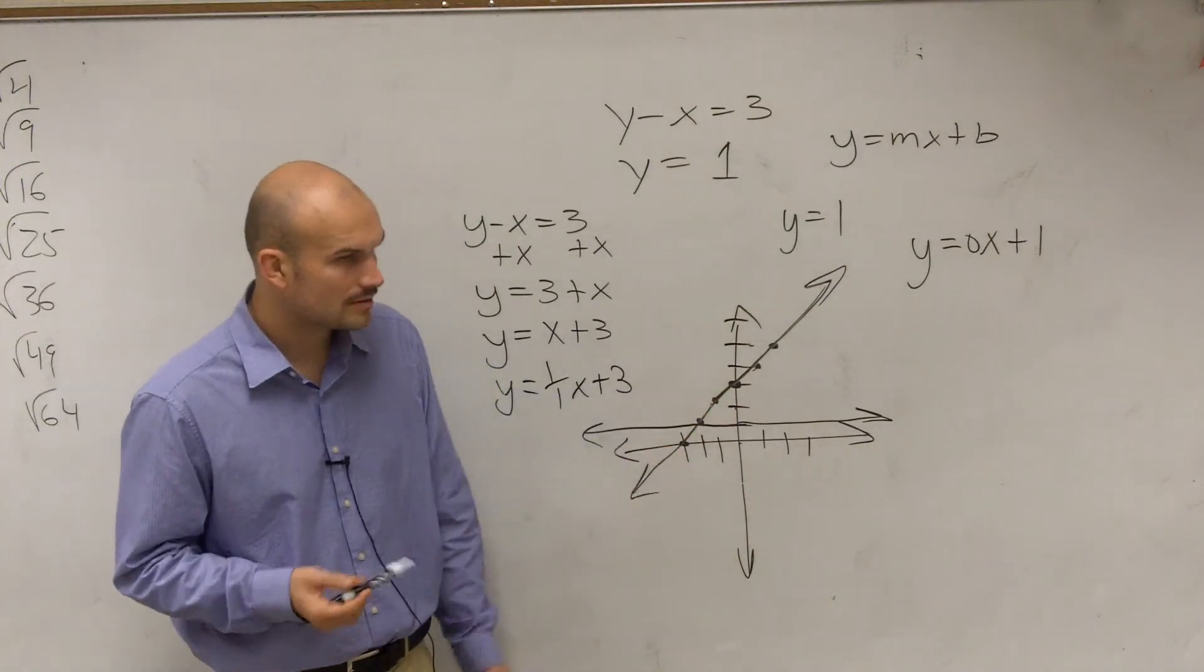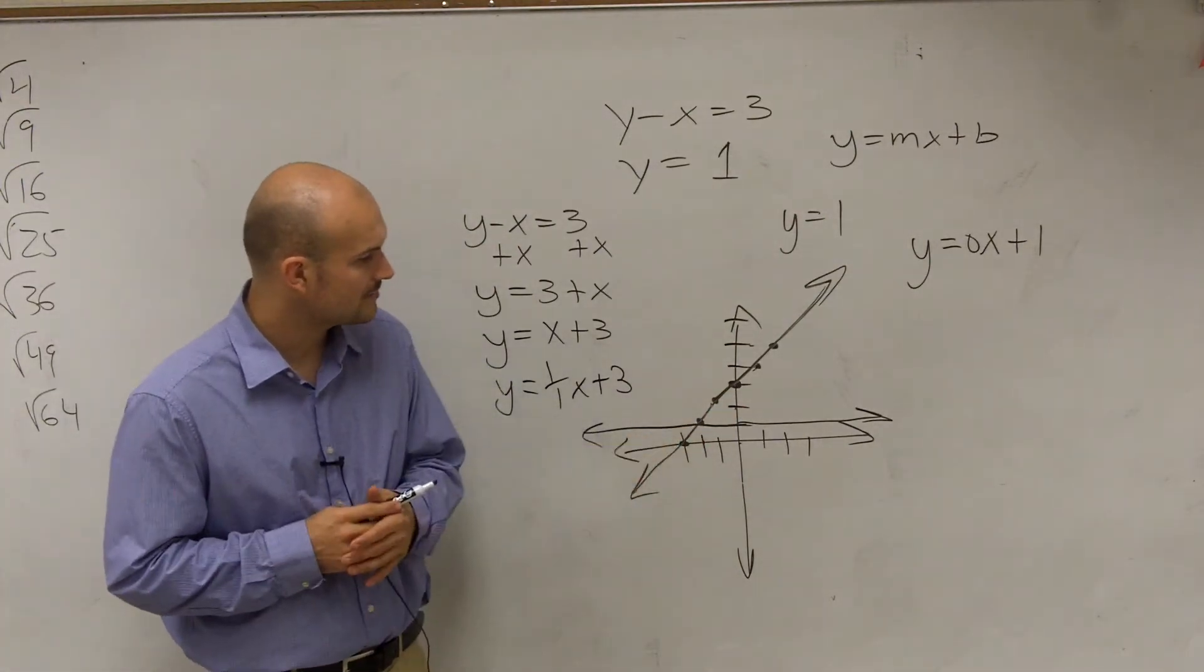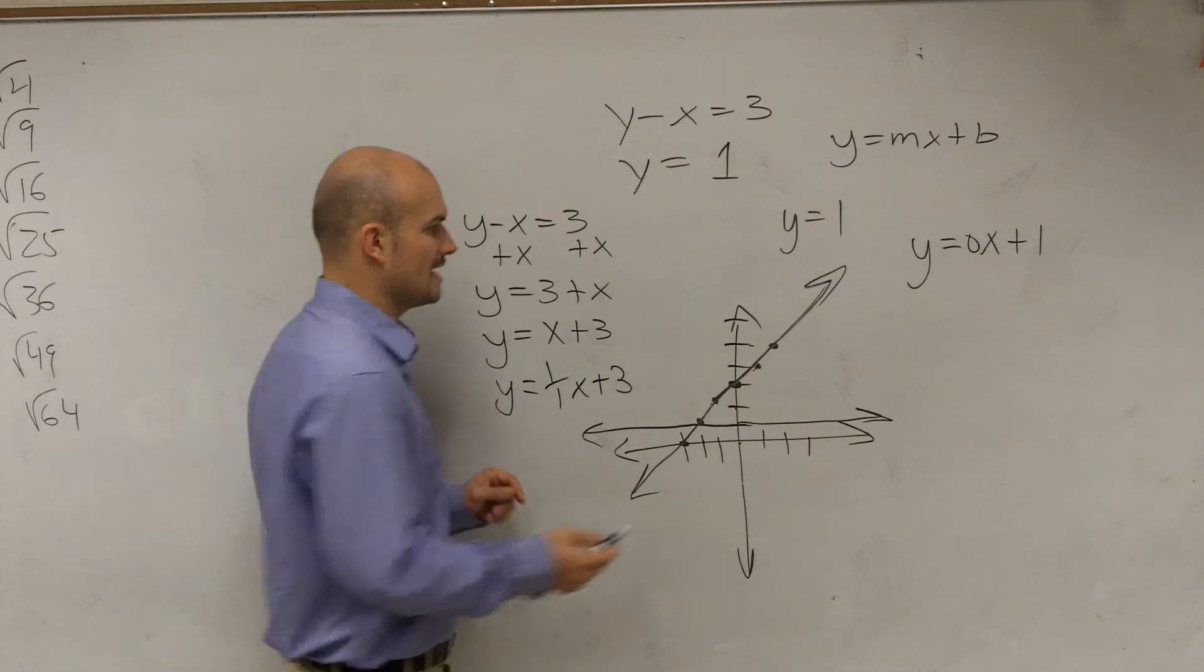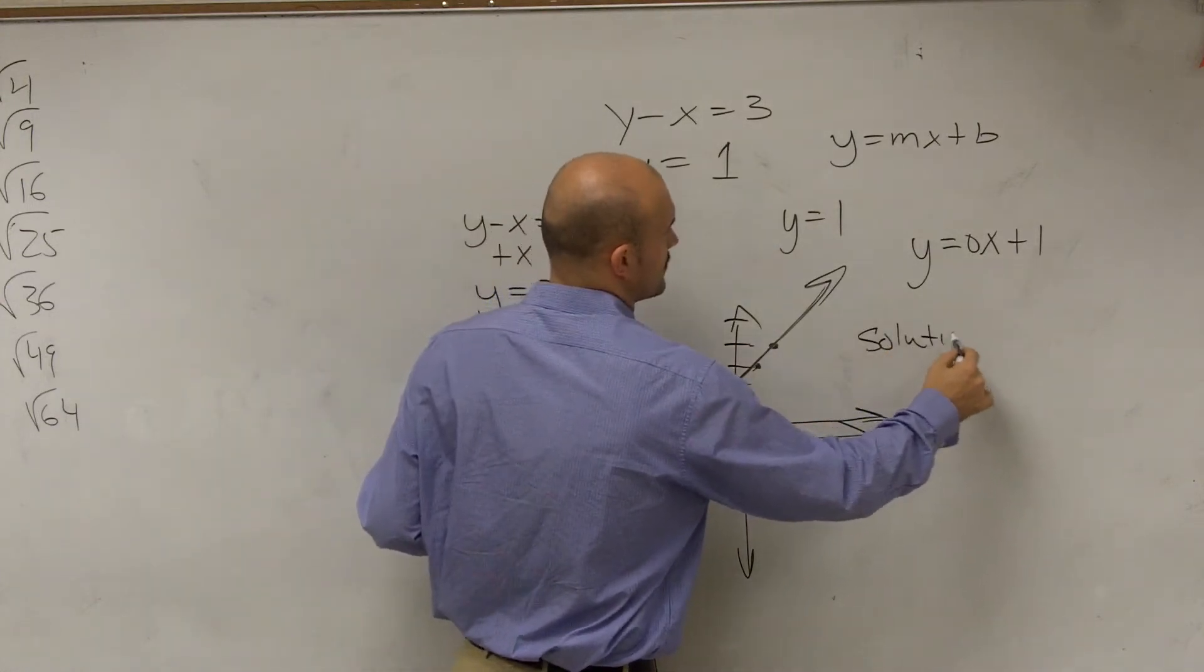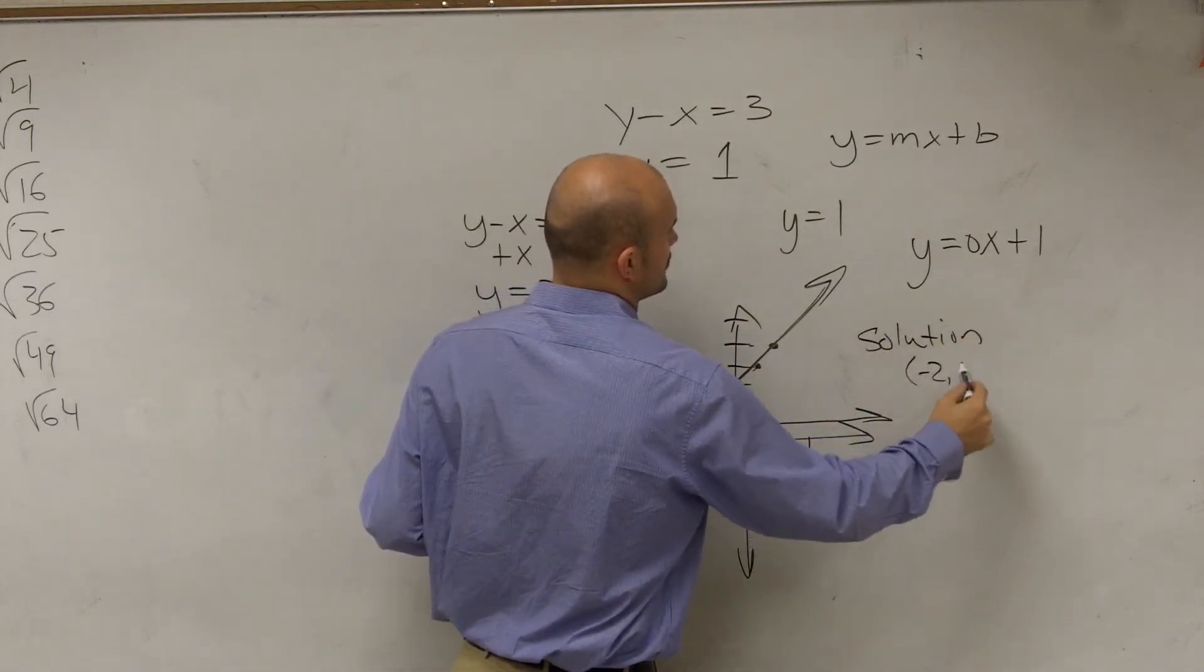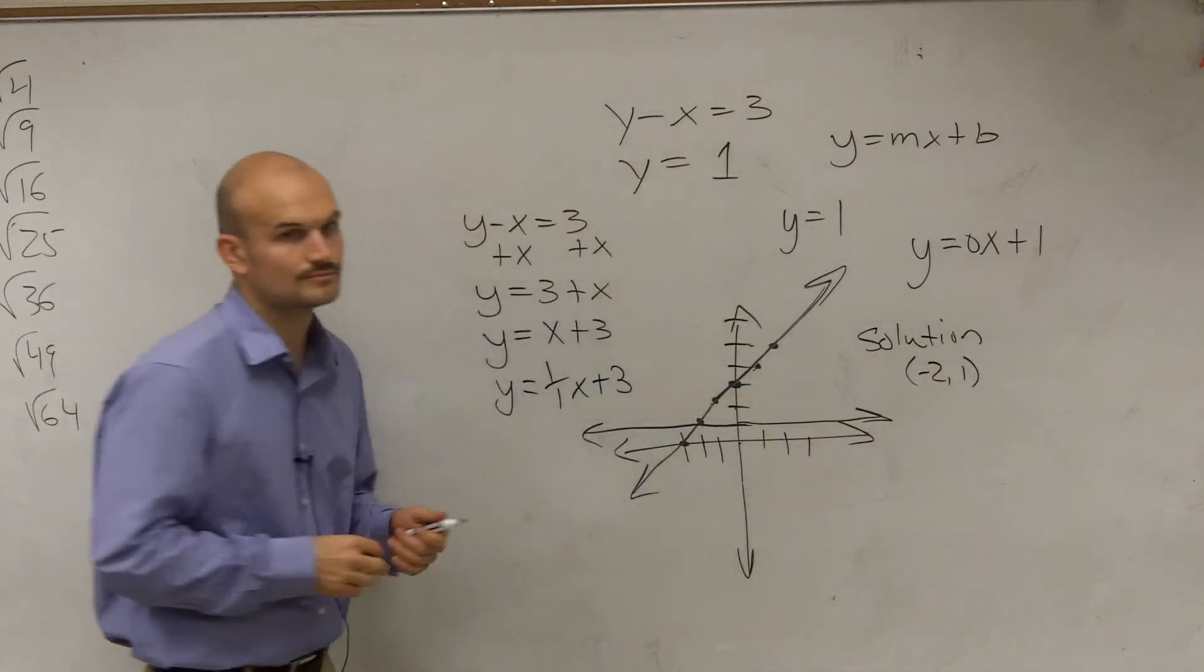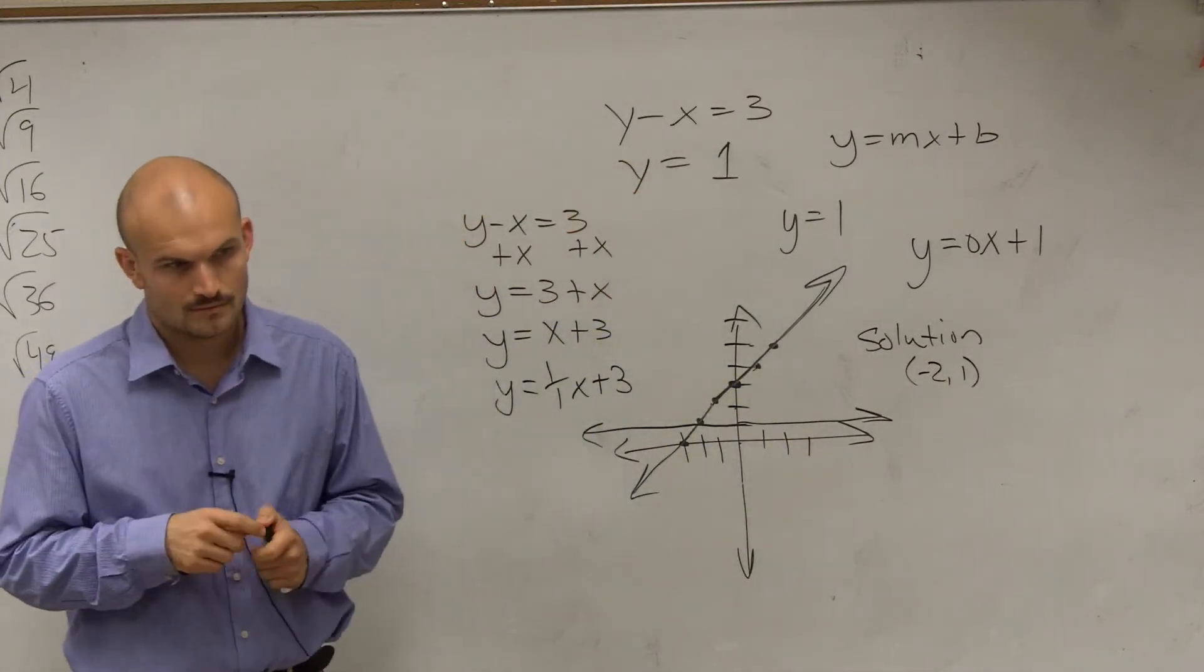Therefore, we look at our intersection point is at negative 2, 1. So you say your solution is at negative 2 comma 1.